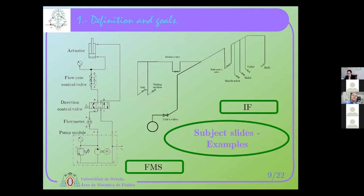This was already done in the subject before the innovation. For the second subject, industrial facilities, we do only half of it, so we have the same number of chapters but a much lower number of slides — less than 130. Some example slides are shown: one on the left is a kind of oleohydraulic system with different valves, actuators, and elements; on the right is for industrial facilities — a water delivery system for a house.